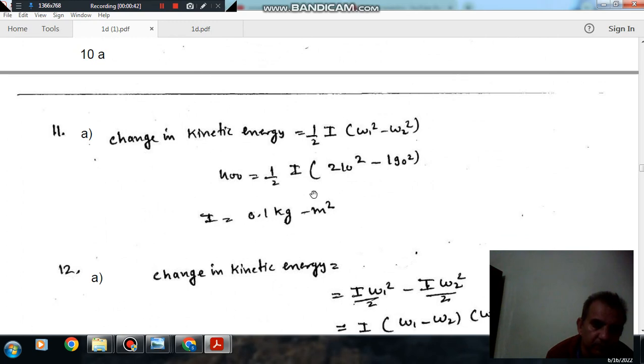So, as speed is getting from 210 to 190, the change in kinetic energy will be I, one by two I, omega 1 squared minus omega 2 squared. Here, omega 1 is 210, and omega 2 is 190.